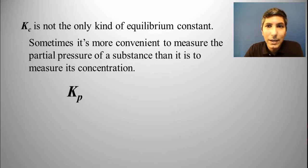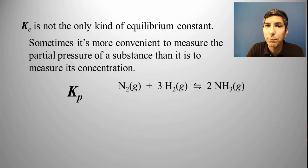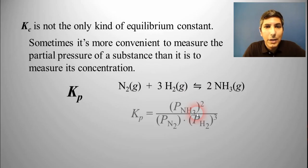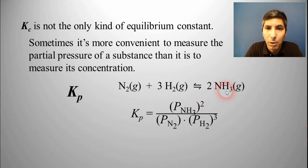It's actually written the exact same way. It's still products over reactants raised to the power of the coefficient. The only difference is it's going to be in terms of partial pressures. We don't use those brackets. But if we're going to write the expression for KP, it's going to look like this: KP equals the partial pressure of the ammonia squared all over the partial pressure of the nitrogen times the partial pressure of the hydrogen quantity cubed.